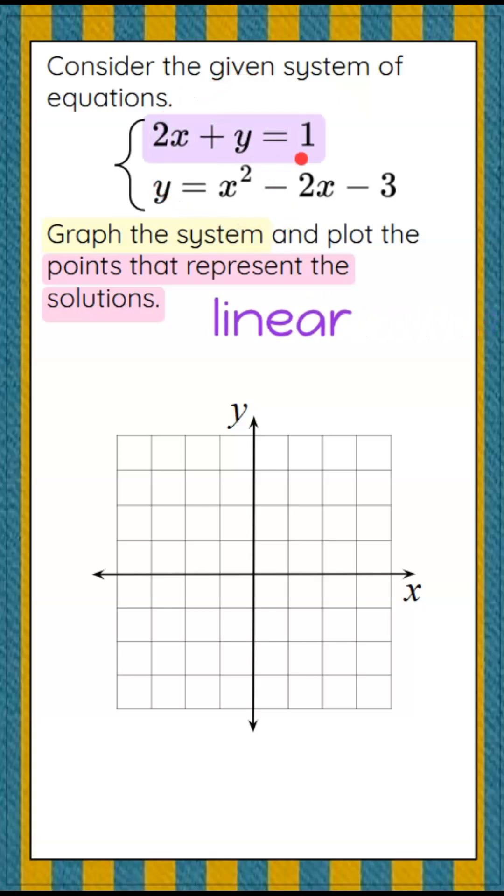We're given 2x plus y equals 1, which is a linear equation, and y equals x squared minus 2x minus 3, which is a quadratic equation.